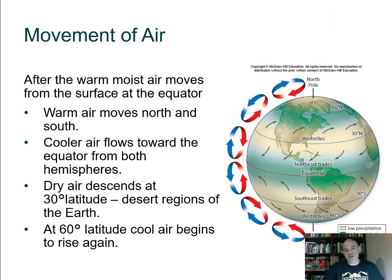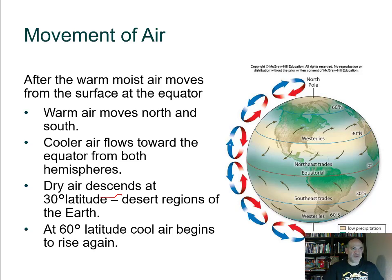Warm air rises and moves north and south from the equator; it cools and descends at about 30 degrees latitude. That descending air is dry, so it takes up moisture — this is where you tend to see deserts at around 30-degree latitudes. Similar convection patterns repeat at 60 degrees and all the way up to the poles.